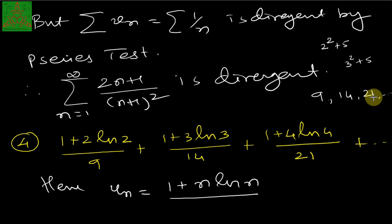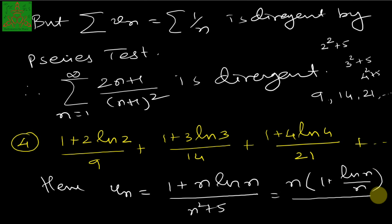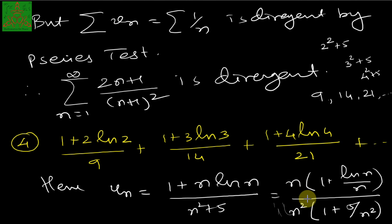Since this is not purely polynomial over polynomial, we factor out the maximum power: n from the numerator gives n·(1/n + ln n), and n² from the denominator gives n²·(1 + 5/n²). This leaves the dominant factor as 1/n, so we take v_n = 1/n.